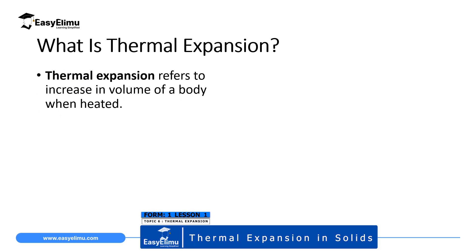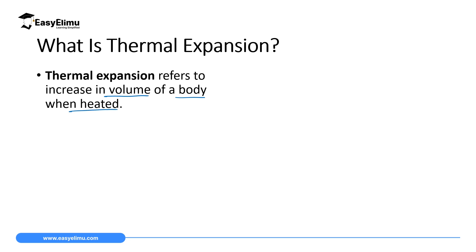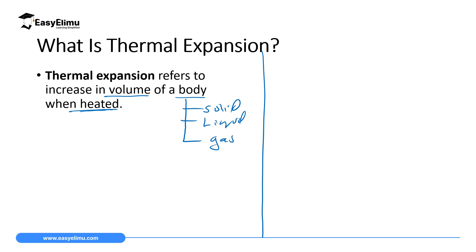Thermal expansion refers to the increase in volume of a body when heated. In this case we are going to discuss expansion caused by increase in heat — remember 'thermal' comes from the word heat. We mean the three main states of matter: solid, liquid, and gas. In this topic on thermal expansion, we are going to discuss expansion caused by increase in heat of solids, then move to liquids, and then gases.